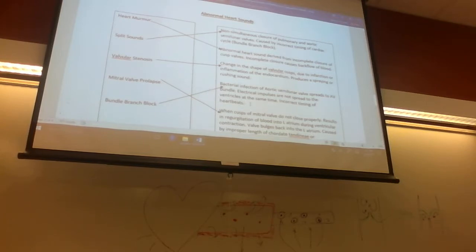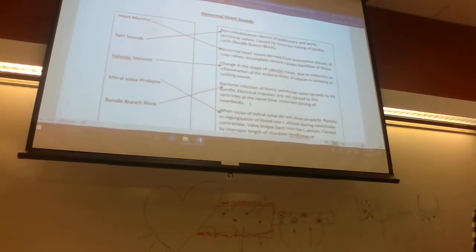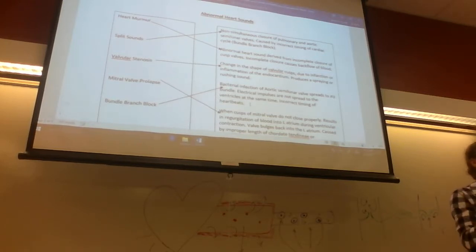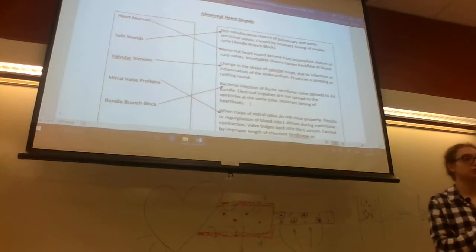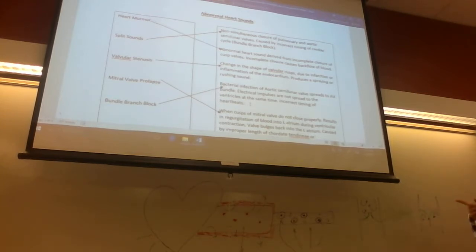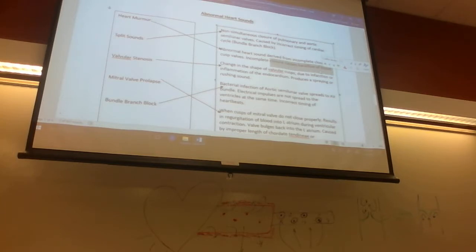Moving to abnormal heart sounds: a heart murmur occurs when the heart valves don't close all the way. When the ventricles contract, the AV valves should close so blood doesn't go back into the atria. But if the tricuspid valve doesn't close properly, blood will pump back into the atria when the ventricles contract — that backflow is known as a murmur. Incomplete closure causes backflow of blood.